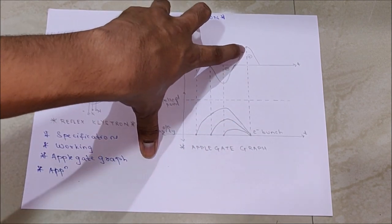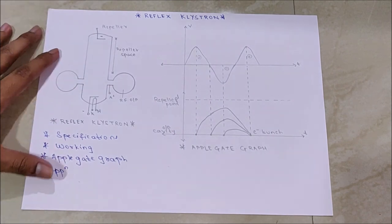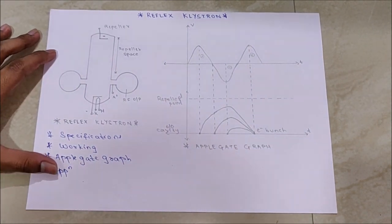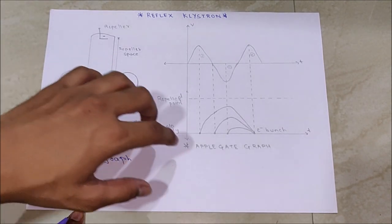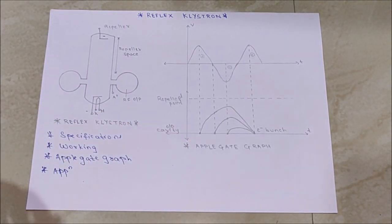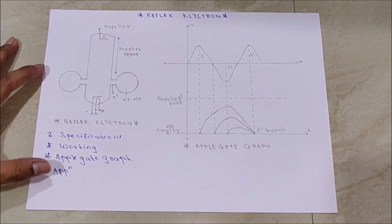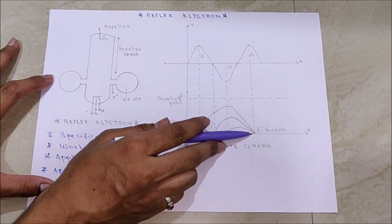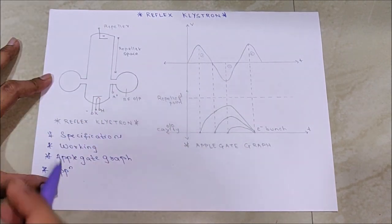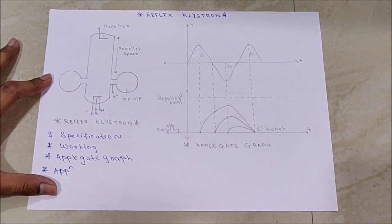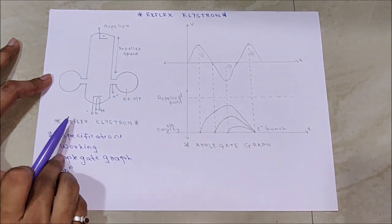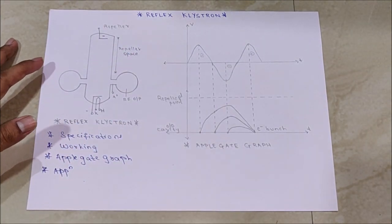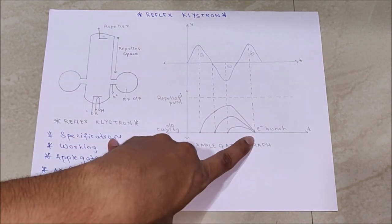This electron bunch, formed using the first noise input we considered, is formed at output cavity and results in the next signal which will move forward. As it is oscillation, it will keep oscillating—this electron bunch will result in the next signal for the same operation, repeating continuously.